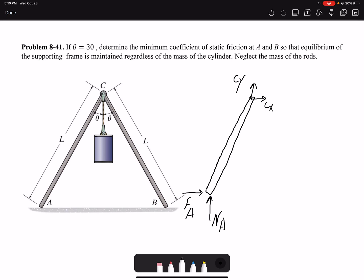And then I have the other member which is technically symmetric, so everything would be the same. I have NB and I have FB which is resisting the relative motion.